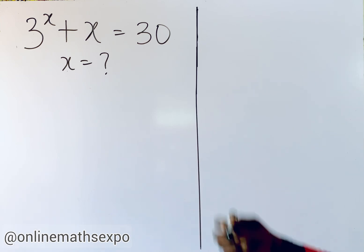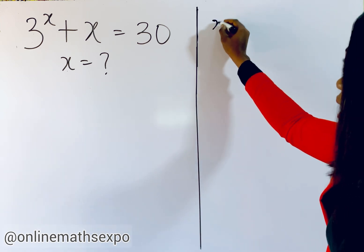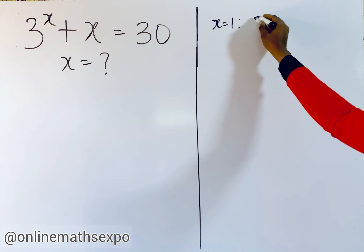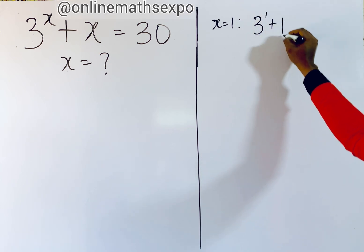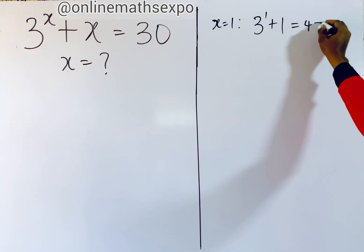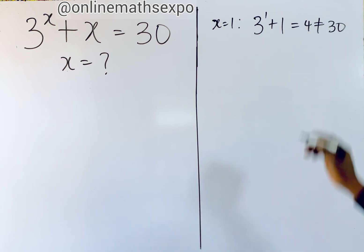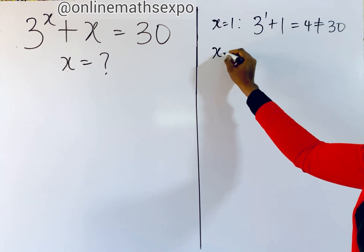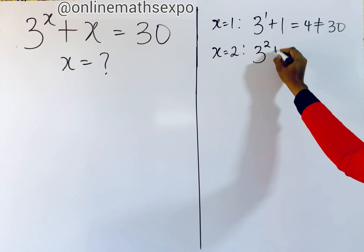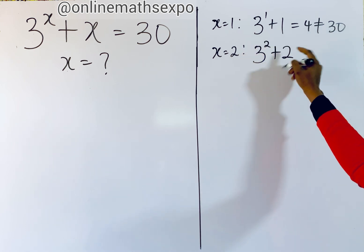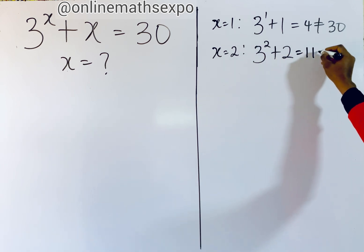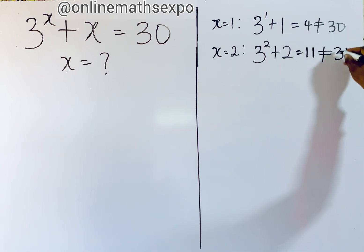Let's suppose x to be 1. If you put x here, you're going to have 3 to the power of 1 plus 1, which gives you 4, and 4 is not equal to 30. Now let's take x to be equal to 2. We are going to have 3 to the power of 2 plus 2. 3 to the power of 2 is 9, plus 2 is 11, which is not equal to 30.